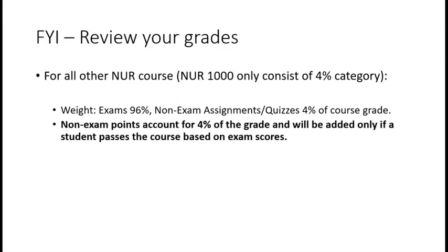A friendly reminder: for all your nursing courses except NUR 1000, your grades are calculated by first looking at the 96% exam category. Your exam average has to be over 78% before the 4% category is added in, which usually raises a student's grade but could bring it down. Make sure you're monitoring your 96% category to stay above 78%, then look at your total score including that 4%.